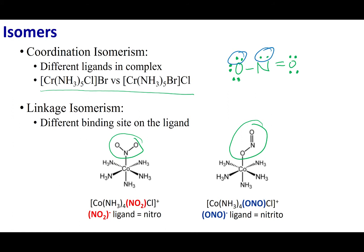These linkage isomers are written out in molecular formulas to highlight the change. When connected through the nitrogen, the ligand is written as NO2; when attached through the oxygen, it is listed as ONO. The ligand also has different names: the connection through nitrogen is called nitro, and if connected through oxygen it is called nitrito.